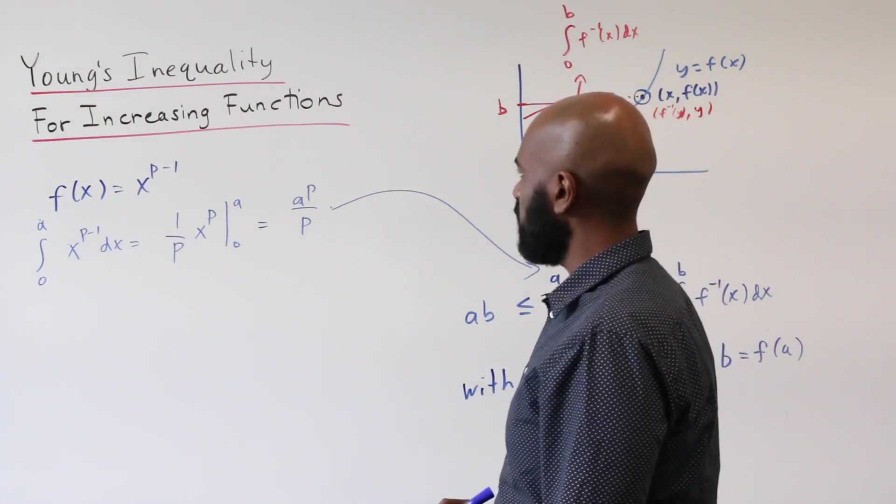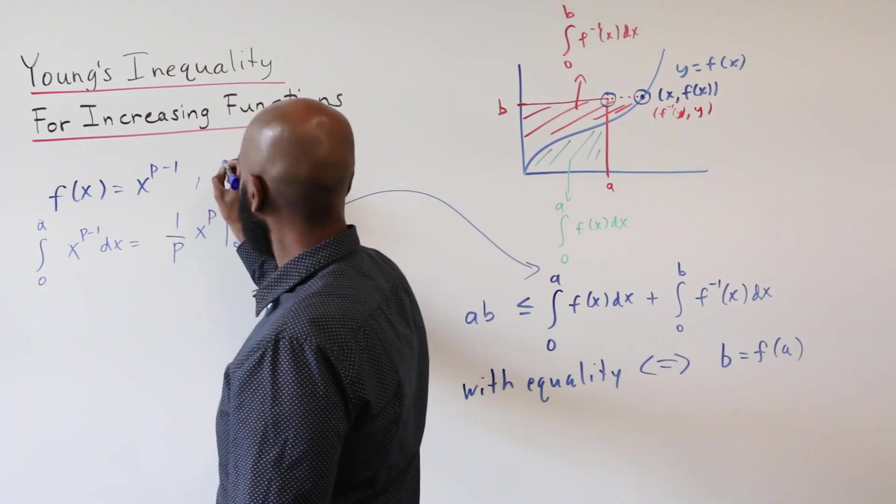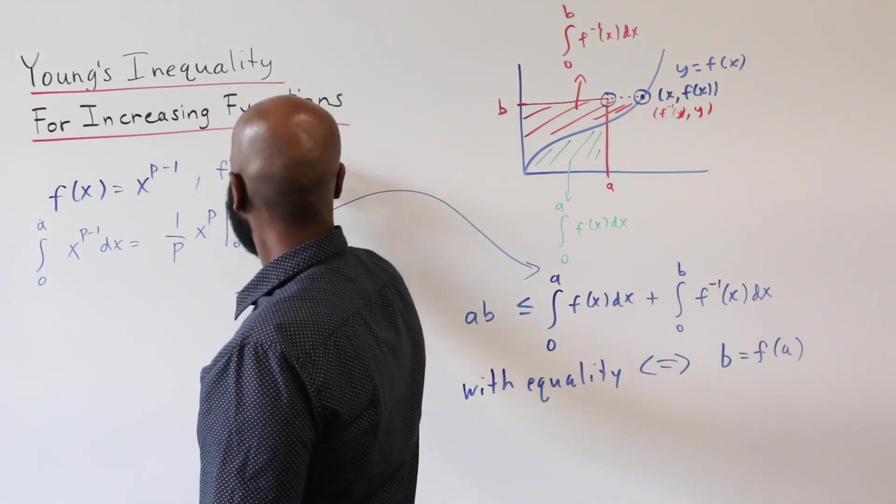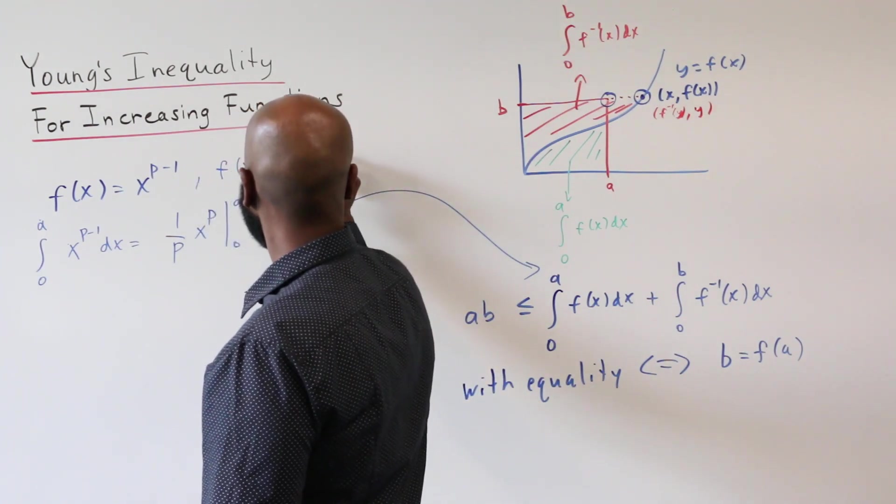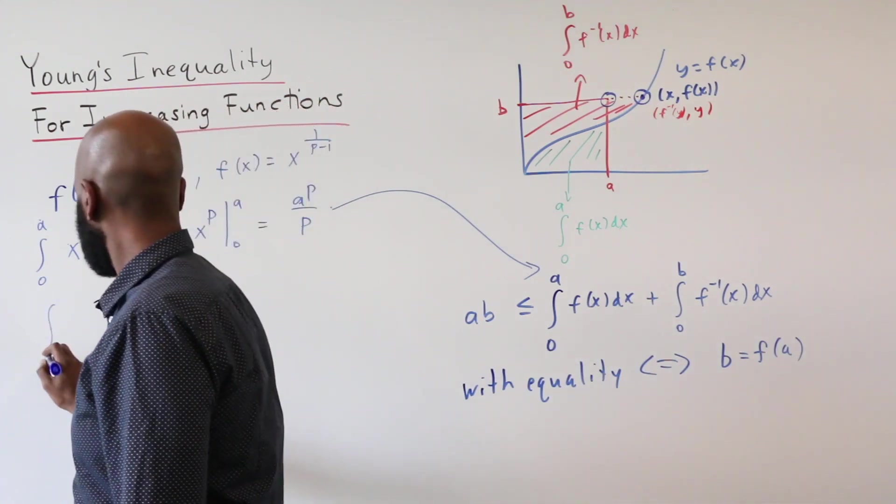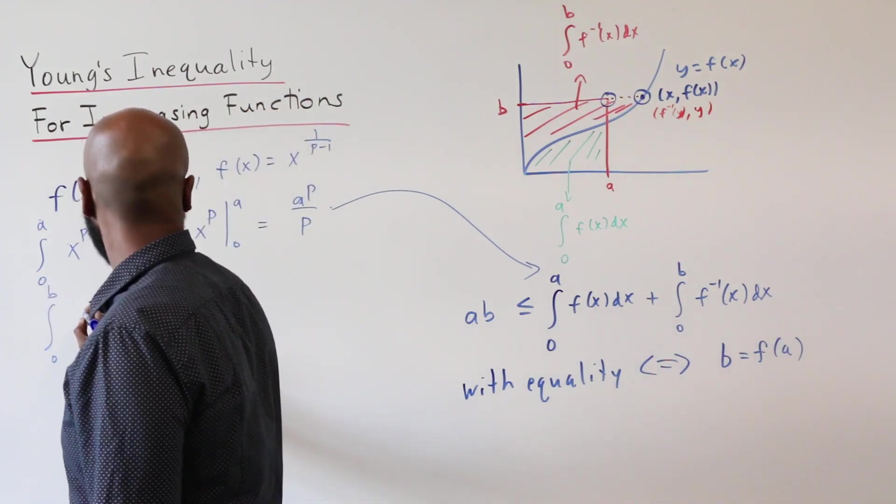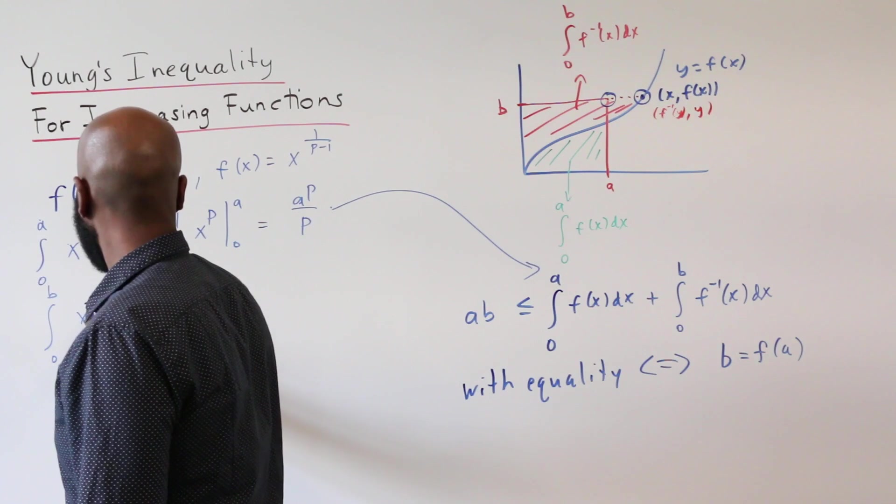Now we need to compute the integral of the inverse of this thing. The inverse of f of x is x to the 1 over p minus 1. And so we're interested in the integral from 0 to B of x to the 1 over p minus 1 dx.